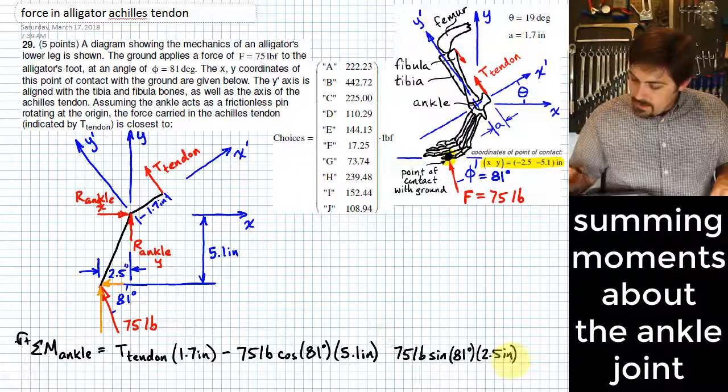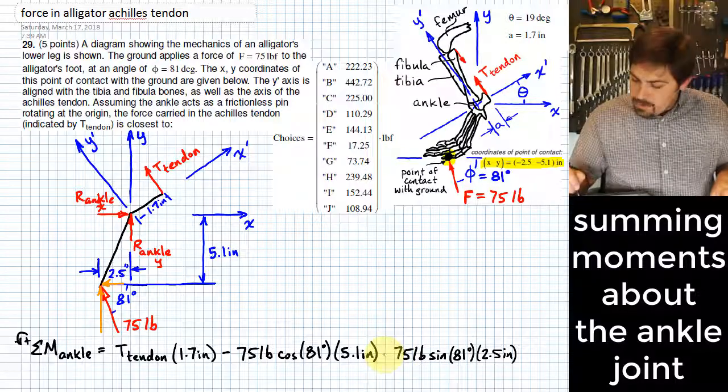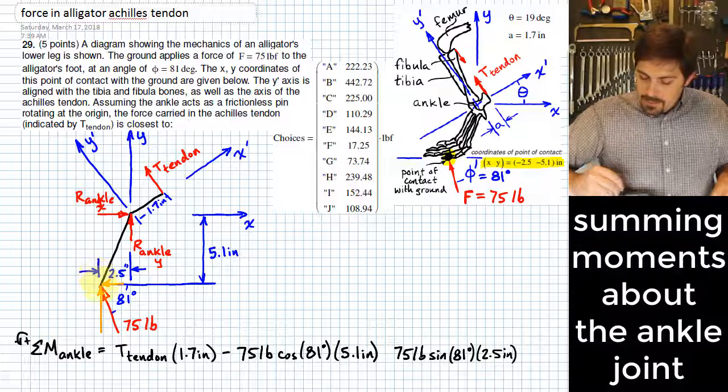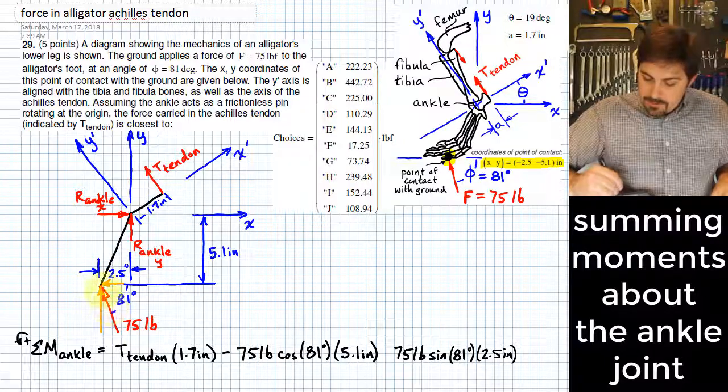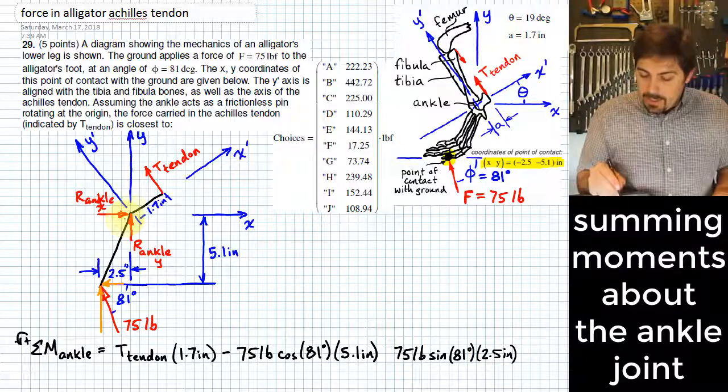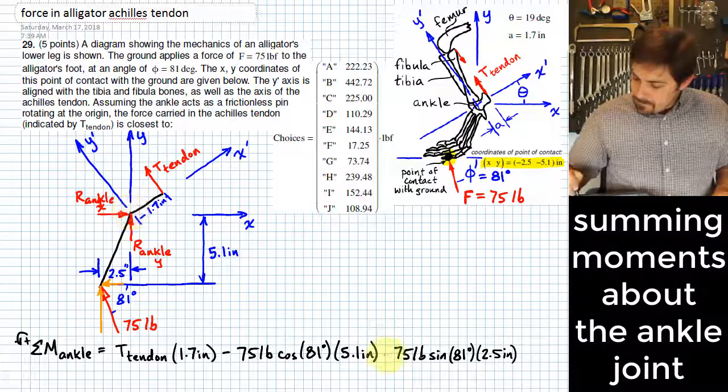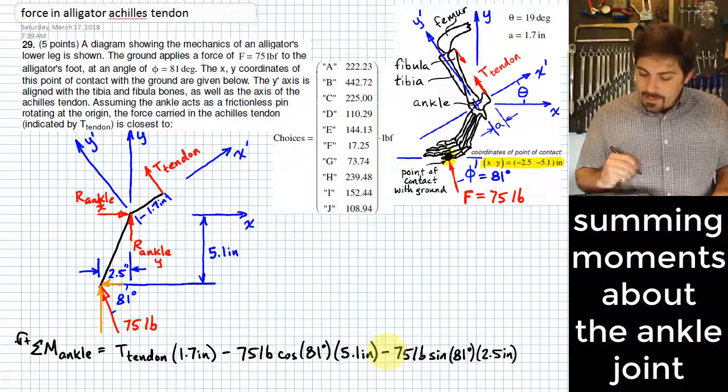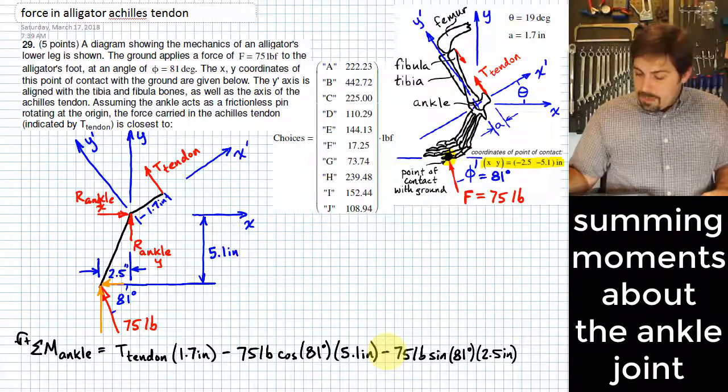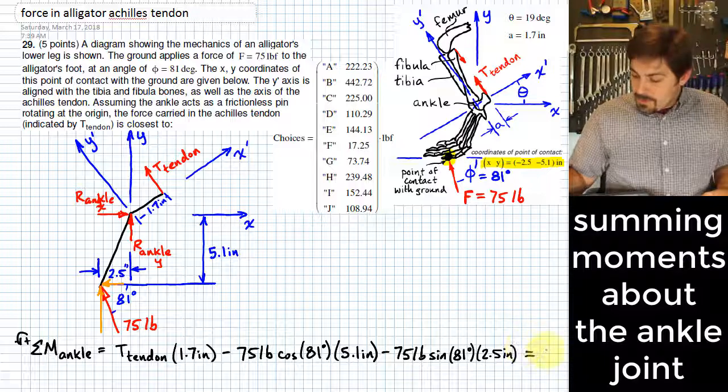And again, you may have noticed I actually didn't put a sign here. That sign is going to be also negative because the tendency is going to be for this force to rotate this body clockwise around the ankle. So I'll put a negative sign in there like this. And I believe that takes care of all of the things that would create moments around the ankle.